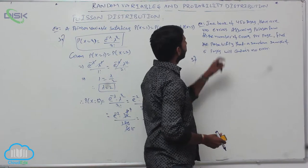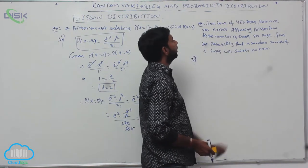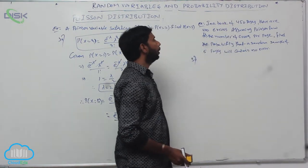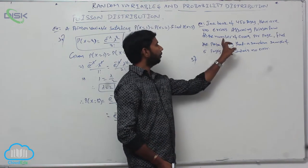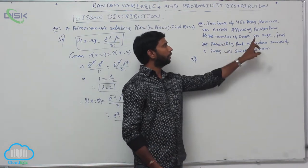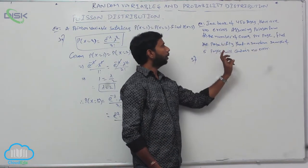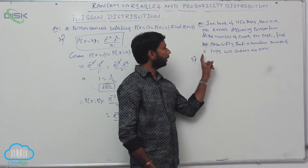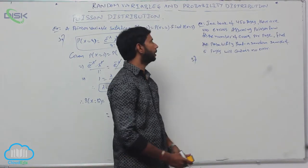P(x=5) is equal to 4 by 15 e to the power minus 2. Next problem: in a book of 450 pages there are 400 errors. Assuming the Poisson law for the number of errors per page, find the probability that a random sample of 5 pages will contain no error.